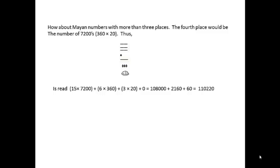How about Mayan numbers with more than three places? The fourth place would be the number of 7,200, that's 360 multiplied by 20, so we're multiplying by 20 again.